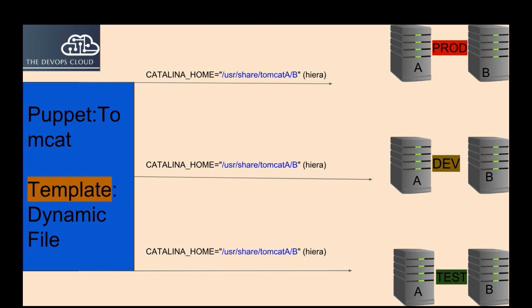For example, say we have two projects, A and B. For project A servers I want CATALINA_HOME to be at /usr/share/tomcatA, and for project B at /usr/share/tomcatB. I don't have to write any condition inside the file — I just use a Hiera lookup to apply the changes based on project environment or server role. If you have a hard time understanding Hiera, don't worry, we have a complete module for Hiera in this course and we will cover all the information in that module.